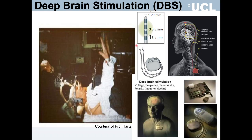Deep brain stimulation involves surgical implantation of electrodes, usually bilaterally, in a brain target area, which are then connected via cables under the skin to an impulse generating device placed in the chest cavity. The voltage, frequency, pulse width, and polarity of stimulation can be controlled with external devices, and the stimulators can also be switched on and off, which is something used in research studies.